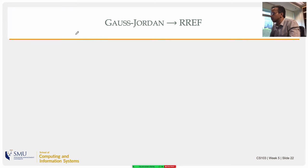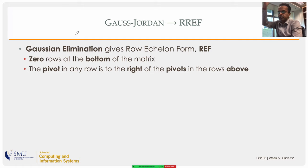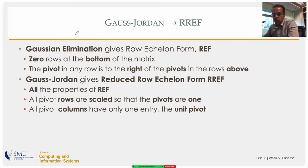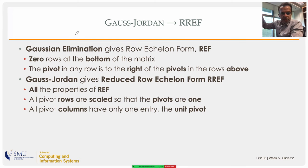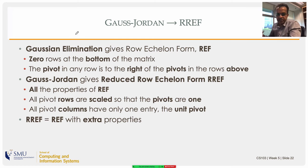In REF, zero rows are at the bottom and each pivot is to the right of the pivot in the row above. Gauss-Jordan adds: it scales pivot rows so pivots equal one, then uses each pivot to eliminate all elements above it in that column, going back up — essentially performing back substitution. So RREF is REF with these additional properties.